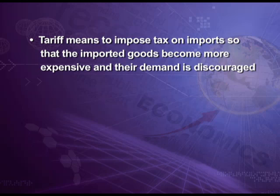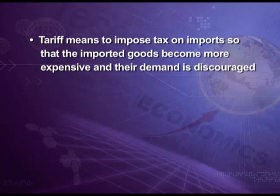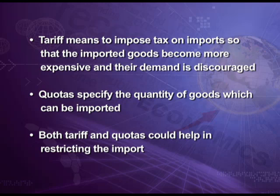Protection from imports was in two forms: tariffs and quotas. Tariff means to impose tax on imports so that imported goods become more expensive and their demand is discouraged. As the law of demand states, when prices become high, demand falls. Similarly, if we impose tax on an imported commodity, it becomes expensive and its demand will fall. Quotas specify the quantity of goods which can be imported. Both tariffs and quotas help in restricting imports.